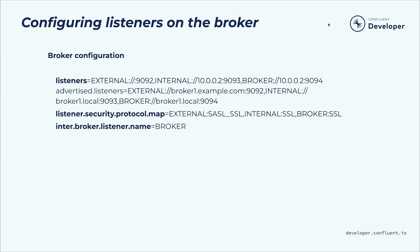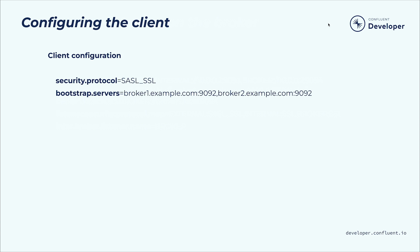The snippet of broker configuration shown here configures three listeners for a broker: a listener for connections from an external network, a listener for connections from an internal network, and a listener for inter-broker communications. The inter-broker and internal listeners are configured to use SSL; the external listener, SASL SSL. This snippet of client configuration specifies that the SASL SSL security protocol should be used to communicate with the listed bootstrap servers.